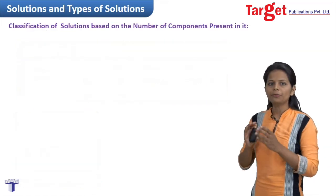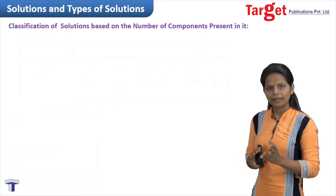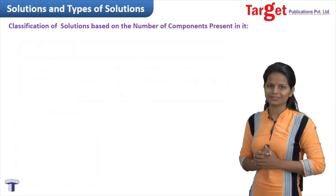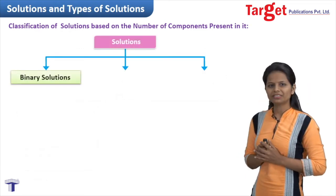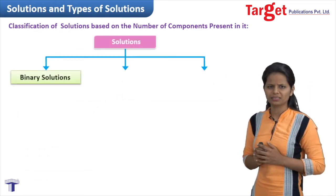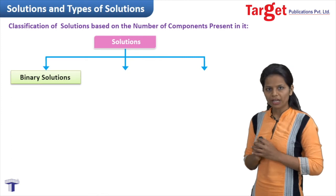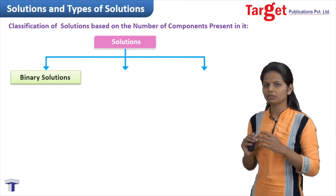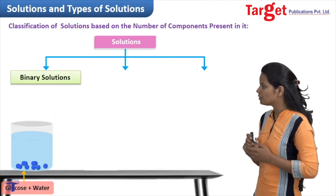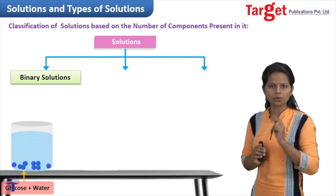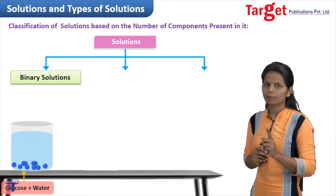Depending on the number of components present in a solution, solutions are categorized into three types: binary solution, ternary solution, and quaternary solution. The first type is binary solution — the word binary means two. Wherever you see two components present in a solution, it is called a binary solution. For example, when you add glucose in water, there are two components in total — glucose and water — so that solution is called a binary solution.